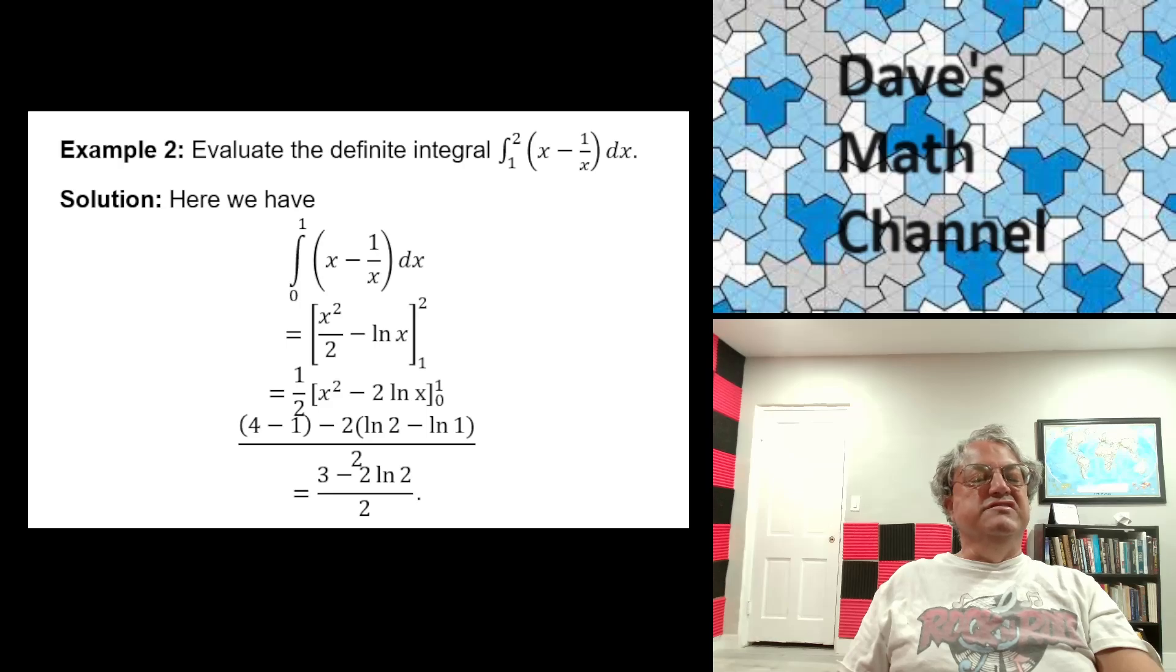But we know that the integral of 1 over x is just ln x. We went over that in the last lesson. So in the end, you get x squared over 2 minus ln x, x evaluated between 1 and 2.